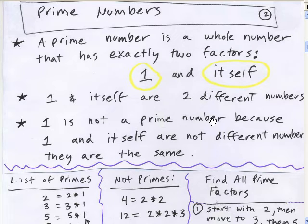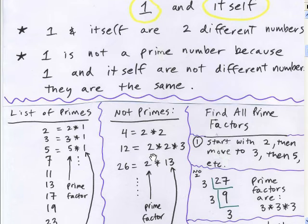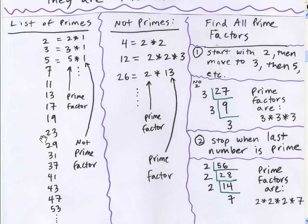One is not a prime number, because one and itself are not different numbers. One and itself, well, that would be one and one. Those are the same numbers, so that's not a prime. Here's a list of primes, just like we saw over there in Excel. Two times one, three times one, five times one. That's all we get for prime numbers. Two factors. This is a prime factor, because it's a prime number. That is not a prime factor, because remember, one is not a prime number.